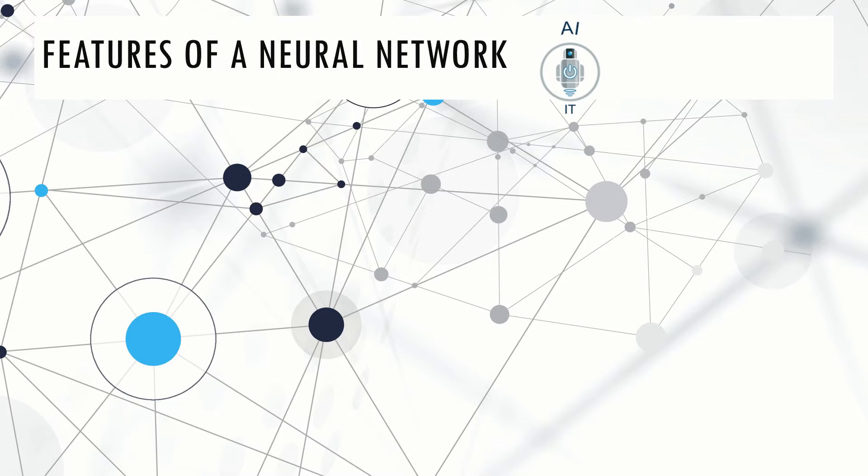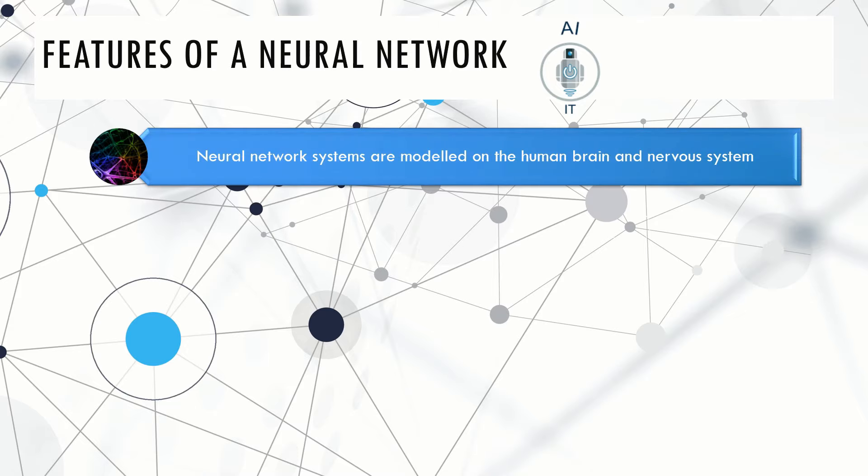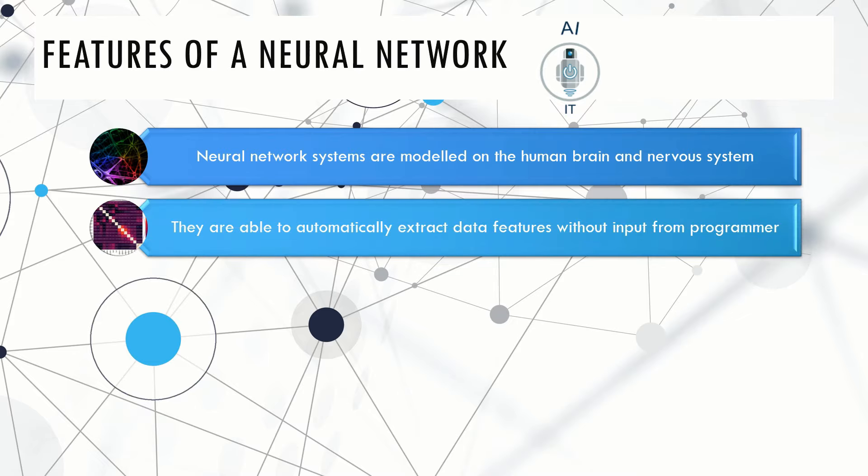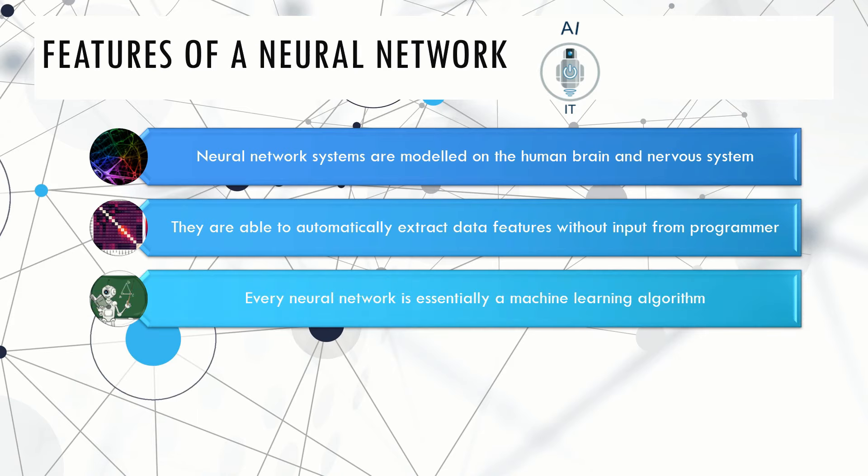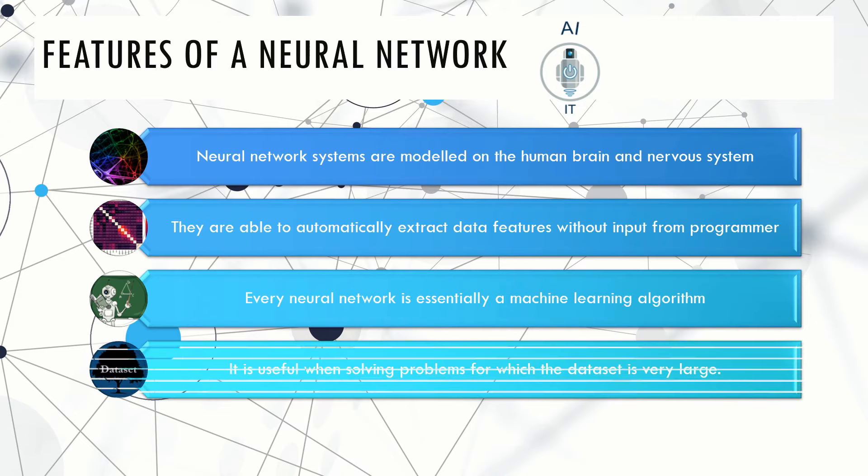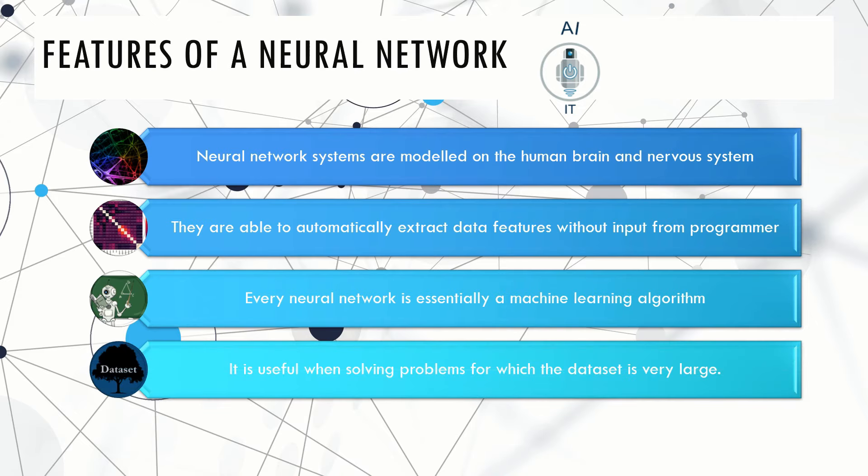Some of the features of neural networks are: these are systems which are modeled on the human brain and nervous system. They are able to automatically extract the data features without the input from the programmer. Every neural network is essentially a machine learning algorithm, and it is useful when solving problems for which the data set is huge or very large.